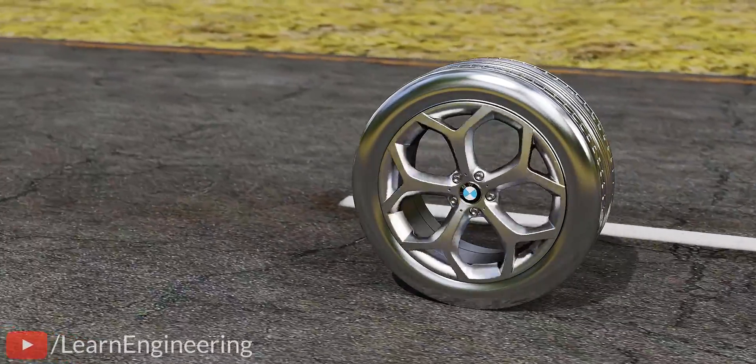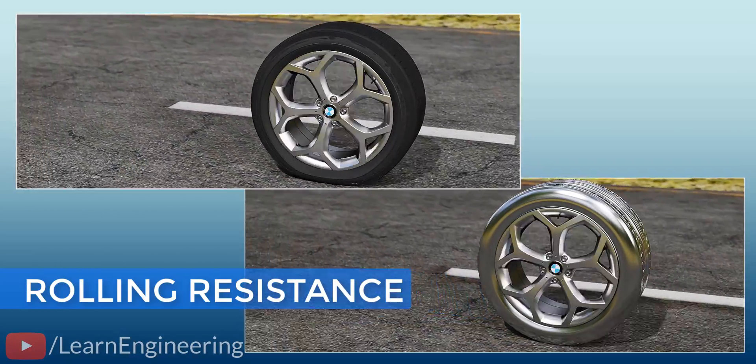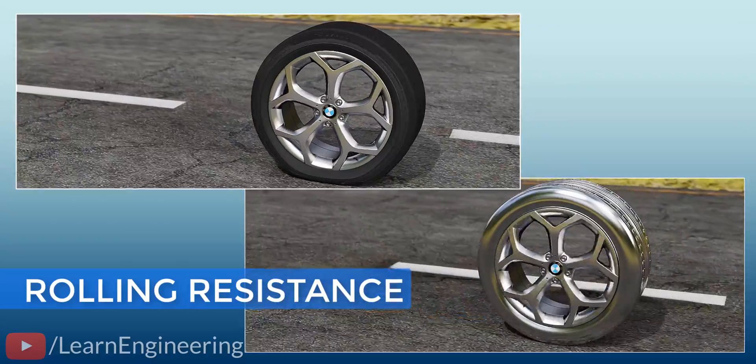In short, the rubber tire has a higher rolling resistance compared to the steel tire. What is rolling resistance? What causes this? Let's explore.